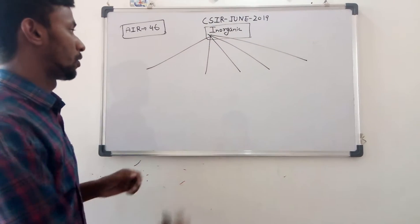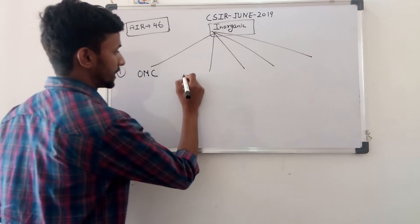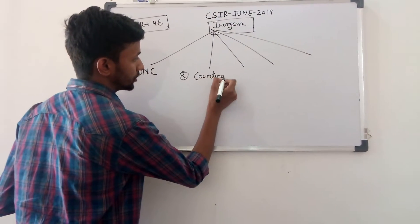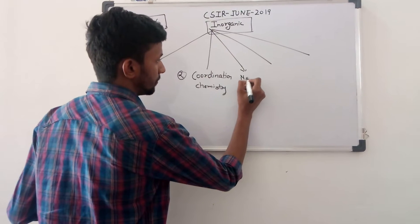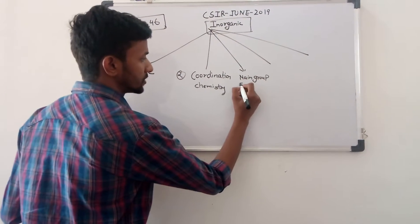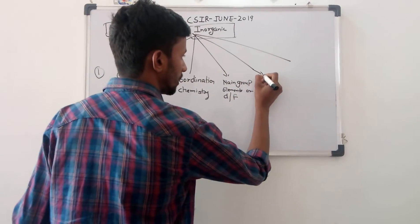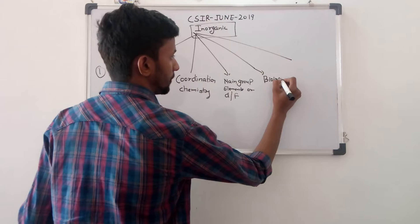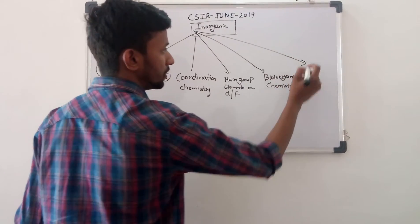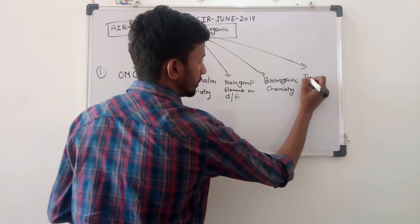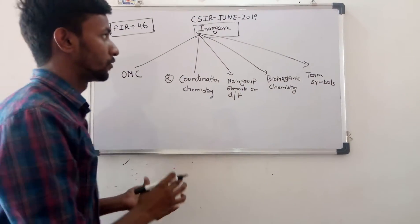I want to give more focus to inorganic chemistry. The main topics which we should study and give more importance to are: first, organometallic chemistry; second, coordination chemistry; third, main group elements - B and A block; fourth, bio-inorganic chemistry; and the fifth one is term symbol.